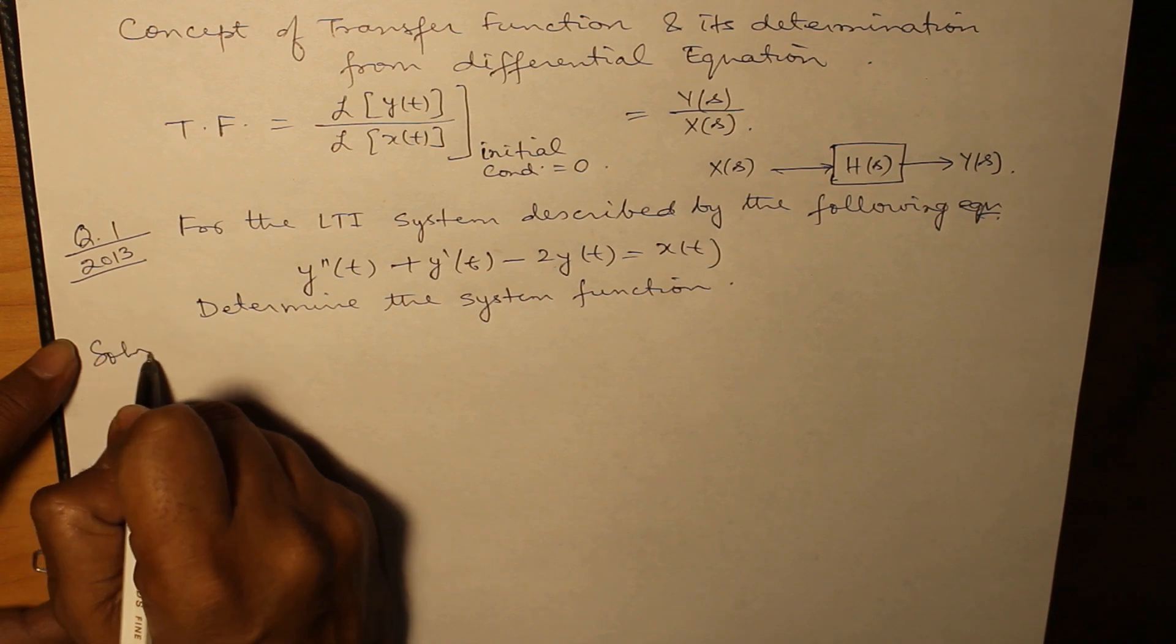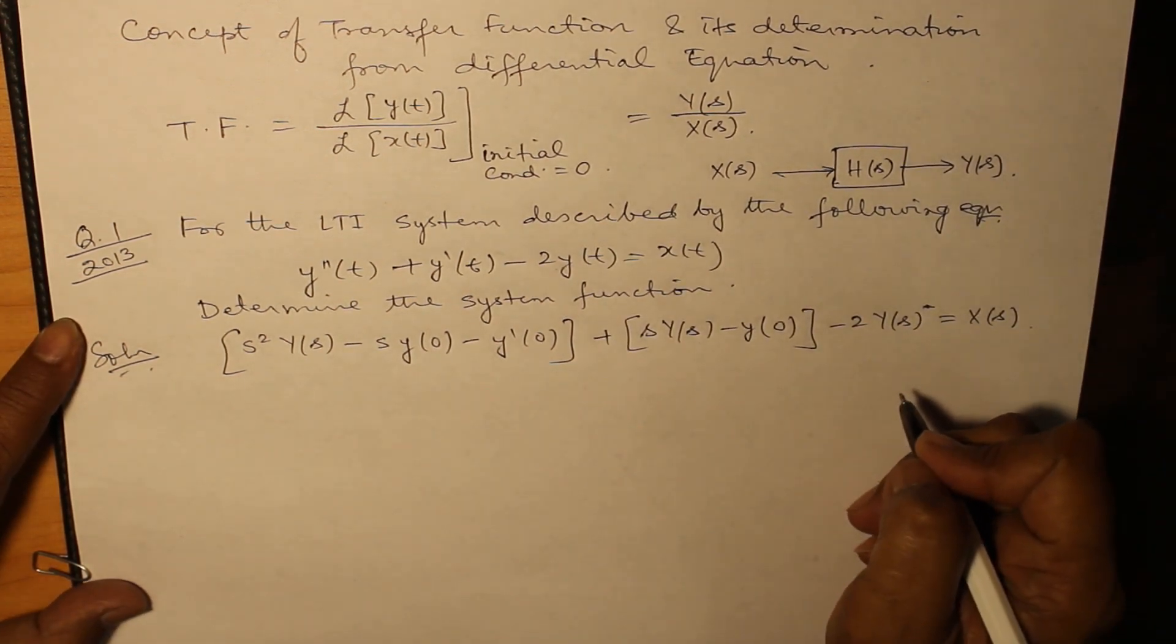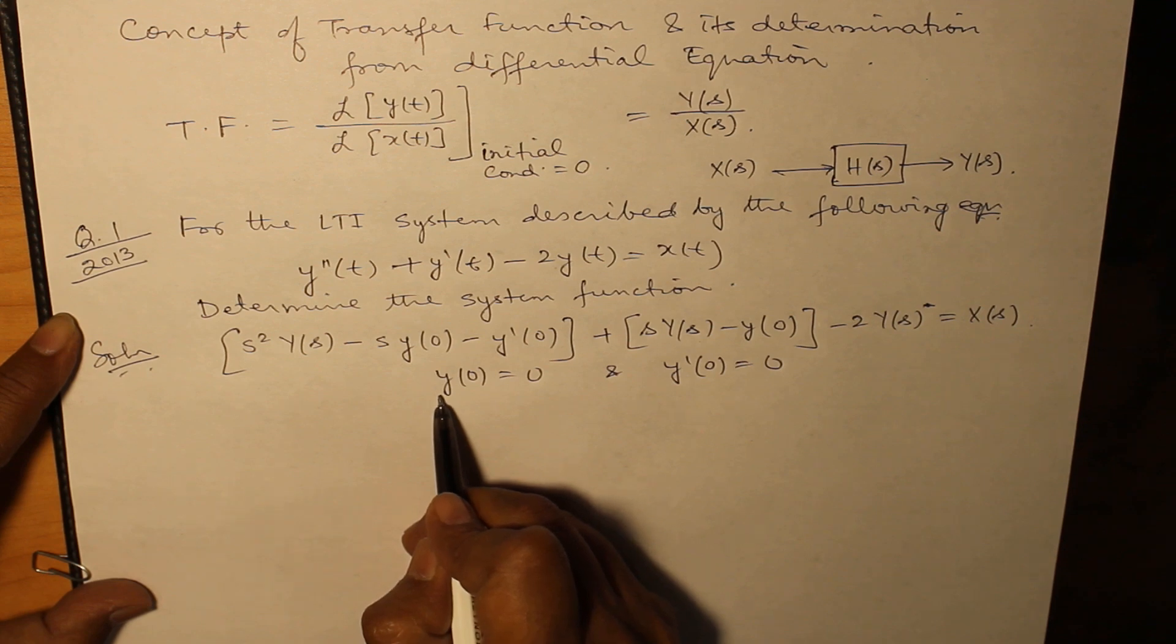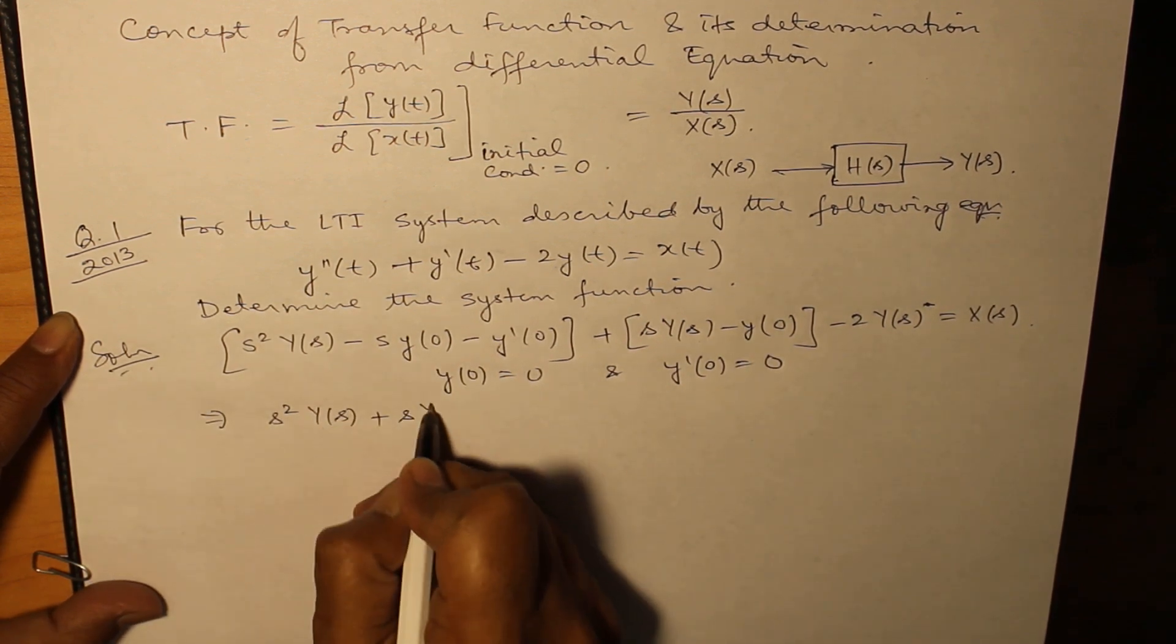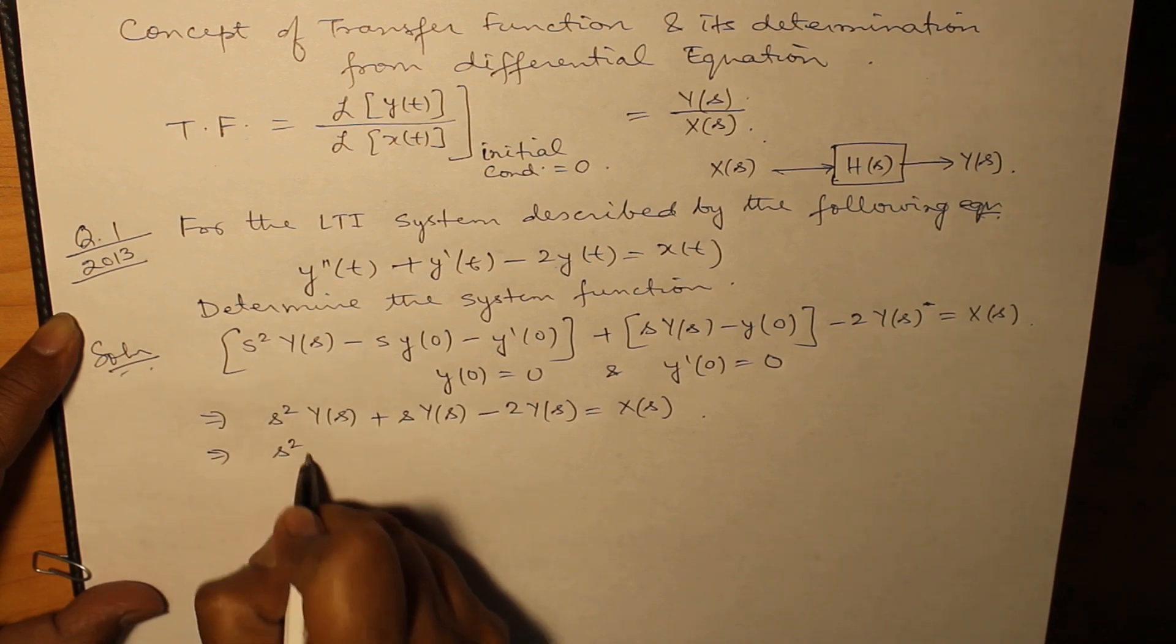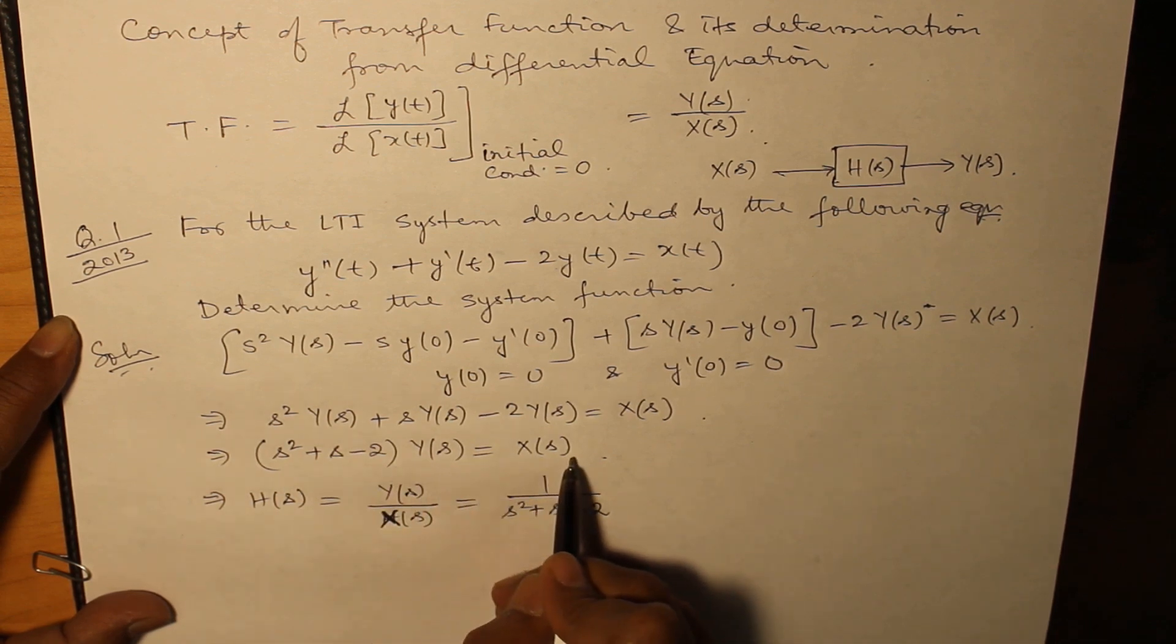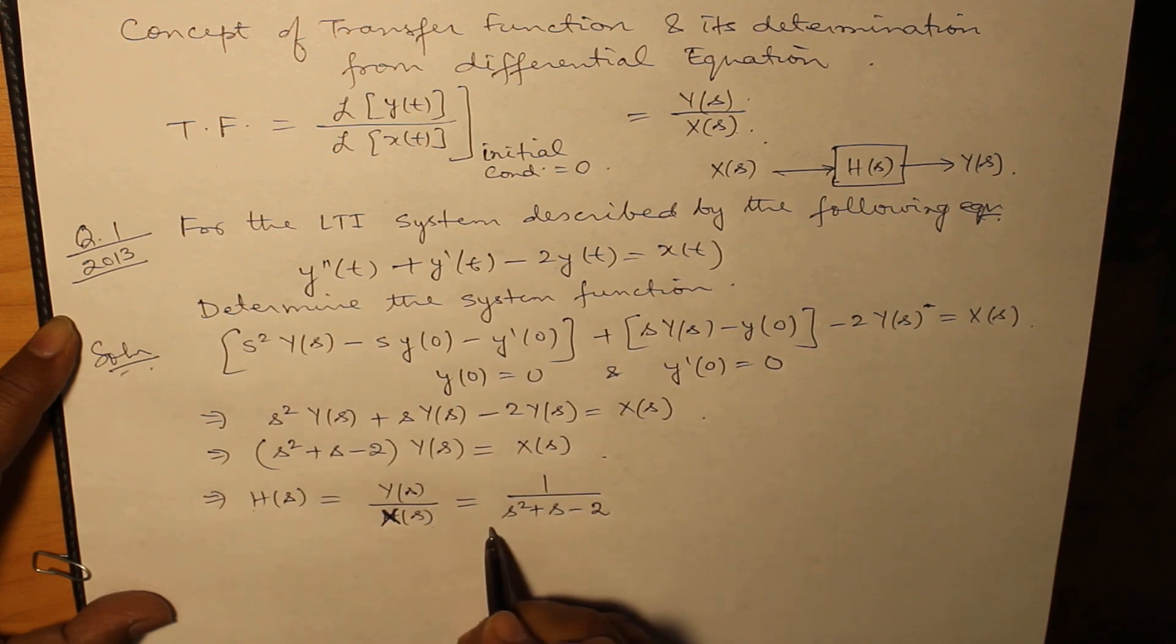We take the Laplace transform of the given differential equation. Since in the given question no initial condition has been provided, so we assume both the initial conditions y at t = 0 as being 0 and y' at t = 0 being 0. Now as per definition, what is transfer function? Y(s) over X(s). So let's find out Y(s) over X(s) here. So an equation (s² + s - 2)Y(s) = X(s). From here we are going to find out the transfer function which is the ratio of Y(s) over X(s). So H(s) = Y(s)/X(s) = 1/(s² + s - 2).